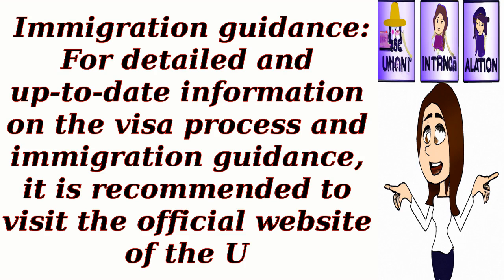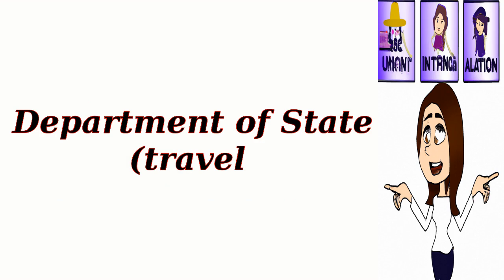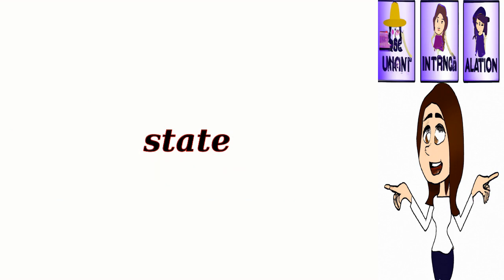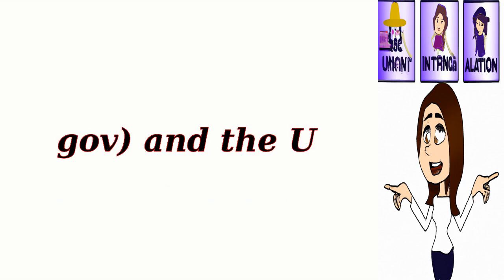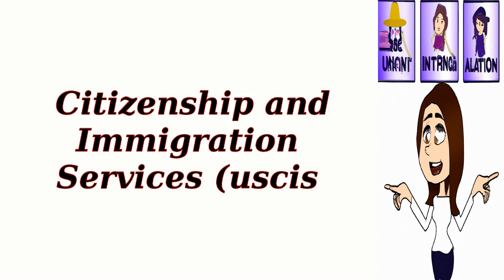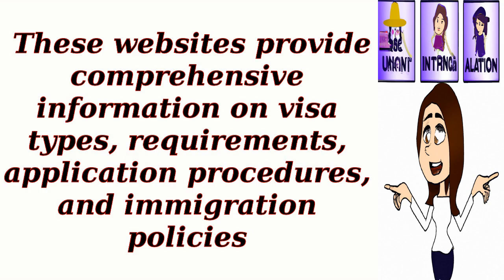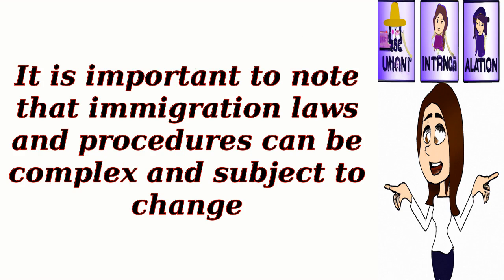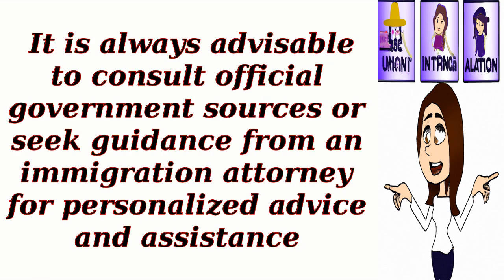For detailed and up-to-date information on the visa process and immigration guidance, it is recommended to visit the official website of the U.S. Department of State and the U.S. Citizenship and Immigration Services (USCIS). These websites provide comprehensive information on visa types, requirements, application procedures, and immigration policies. It is important to note that immigration laws and procedures can be complex and subject to change, so it is always advisable to consult official government sources or seek guidance from an immigration attorney for personalized advice and assistance.